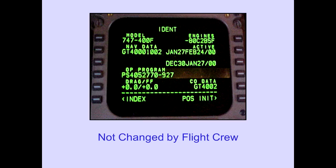The identification page identifies the information stored in the FMC. These lines identify airplane model, engine type, operating program, drag factor, and fuel flow factor. These lines are not changed by the flight crew.